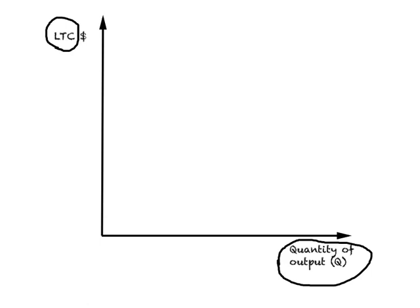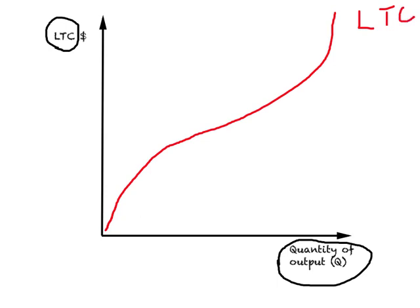Since we are looking at long-run phenomena where we do not have any fixed input, all costs are going to be variable. So when you produce nothing it will cost you nothing. The firm tries to figure out the lowest possible total cost of producing each level of output, and when we plot those points and join them we get a long-run total cost curve that starts from the origin.